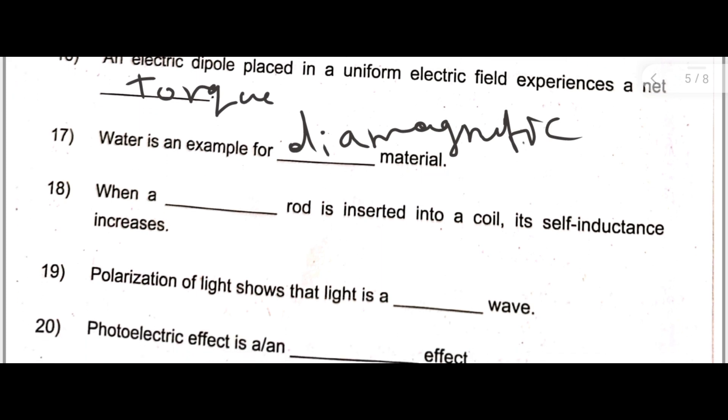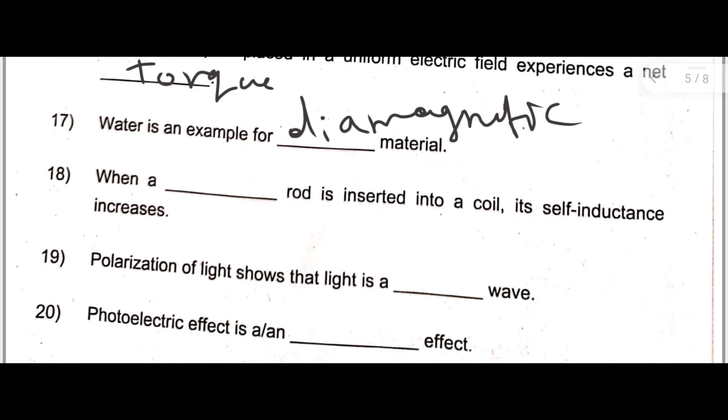Next, when a dash rod is inserted into a coil, its self-inductance increases. Here, ferromagnetic - this is ferromagnetic rod.